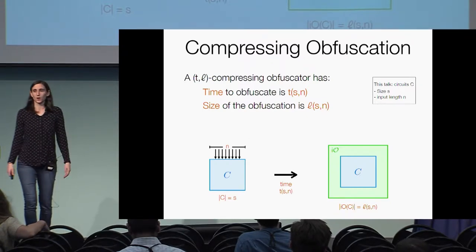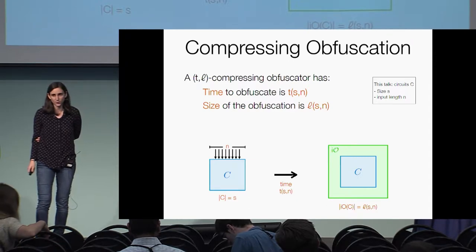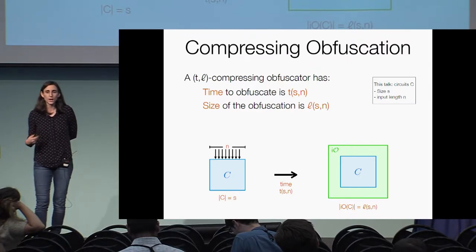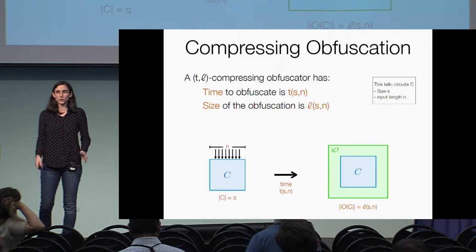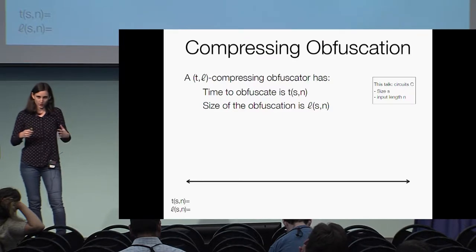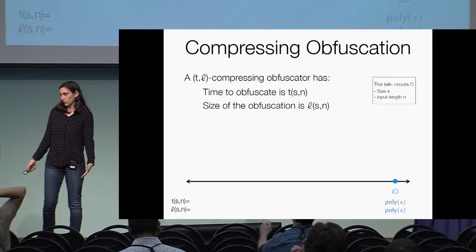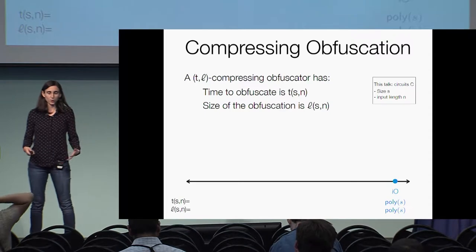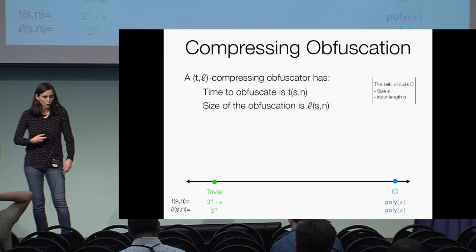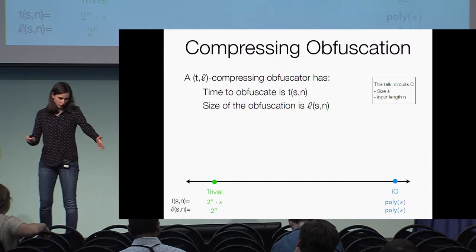Throughout this talk, I'll be talking about a circuit C with size S and input length N. With that notation, we can define a TL compressing obfuscator as one where the time to obfuscate is some function T of S and N, and the resulting size of the obfuscation — the size of the obfuscated circuit — is some function L of S and N. Parametrizing obfuscation in this way already captures some known primitives. First and foremost, IO is a compressing obfuscator where all we require is efficiency, namely polynomial in the size of the circuit. On the other extreme, we could conceive of a trivial obfuscator which receives some circuit, runs it on all 2^N inputs, and outputs the truth table of size 2^N.